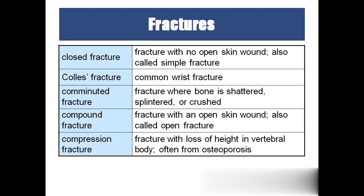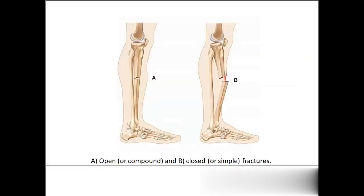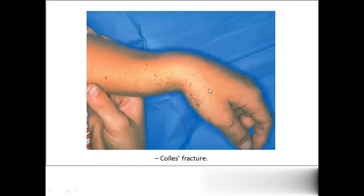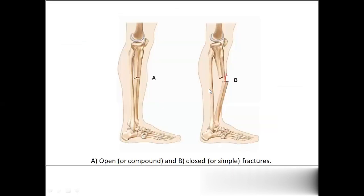Compound fracture — the person can see the fracture with bleeding, and it is an open fracture. Compression fracture occurs when there is a lot of compression on the bones. Compression fractures are usually seen in the vertebral body because of osteoporosis.